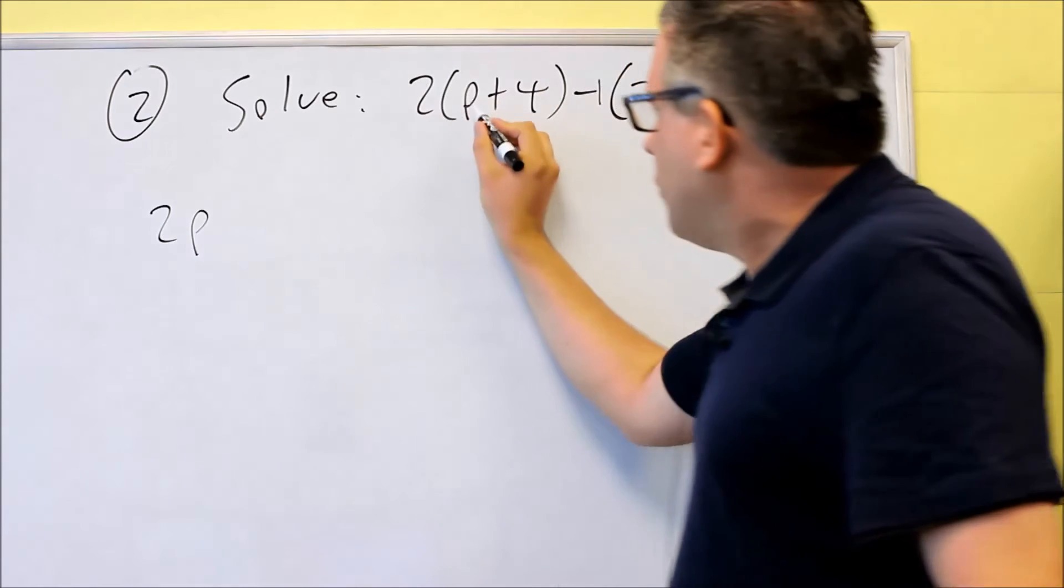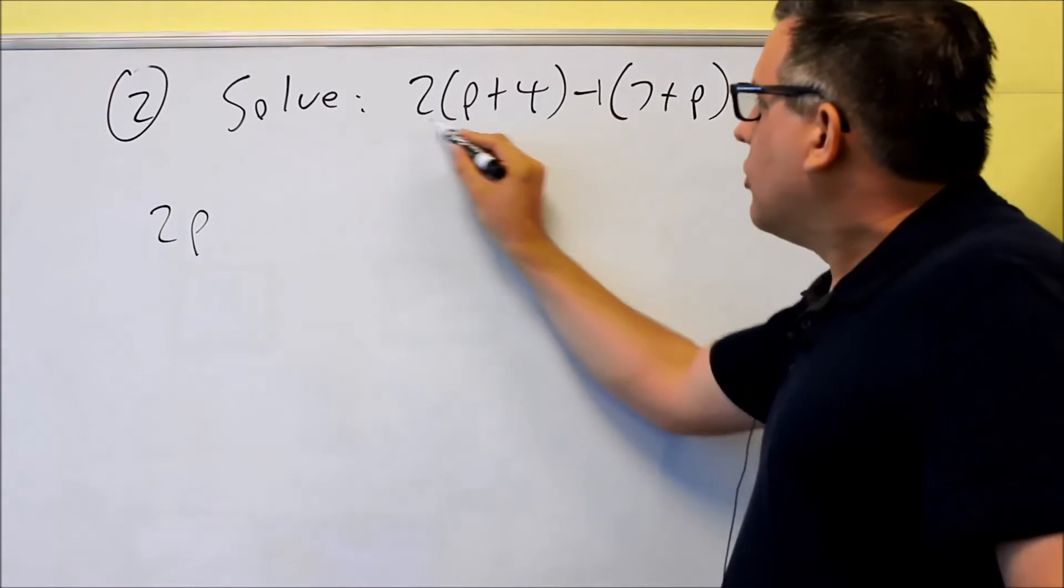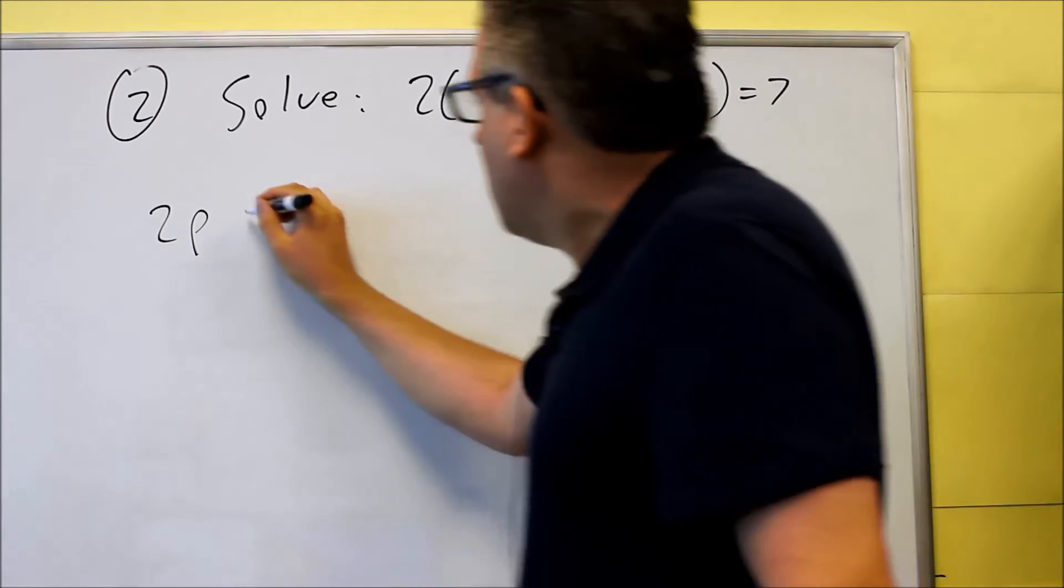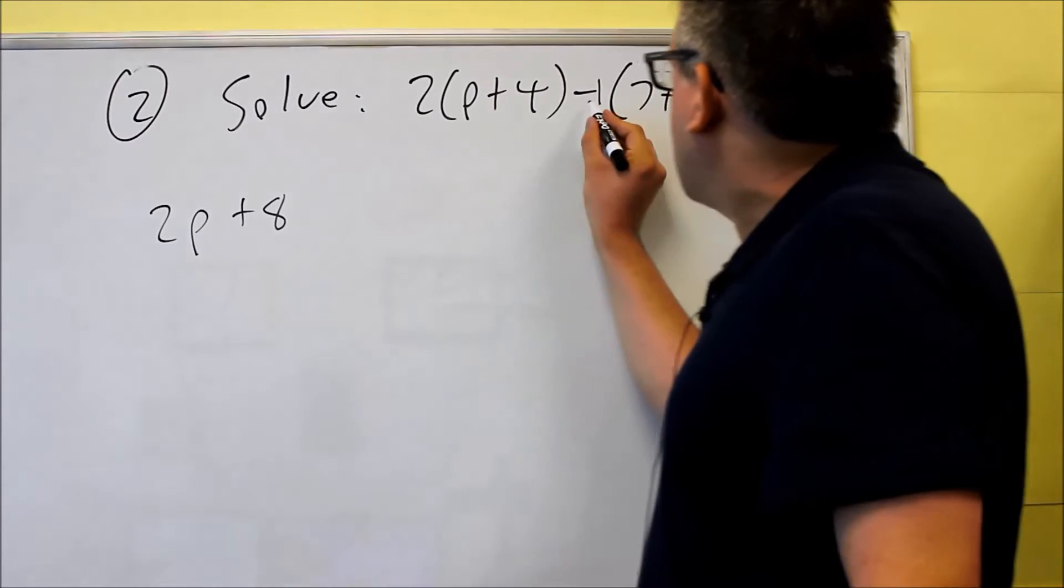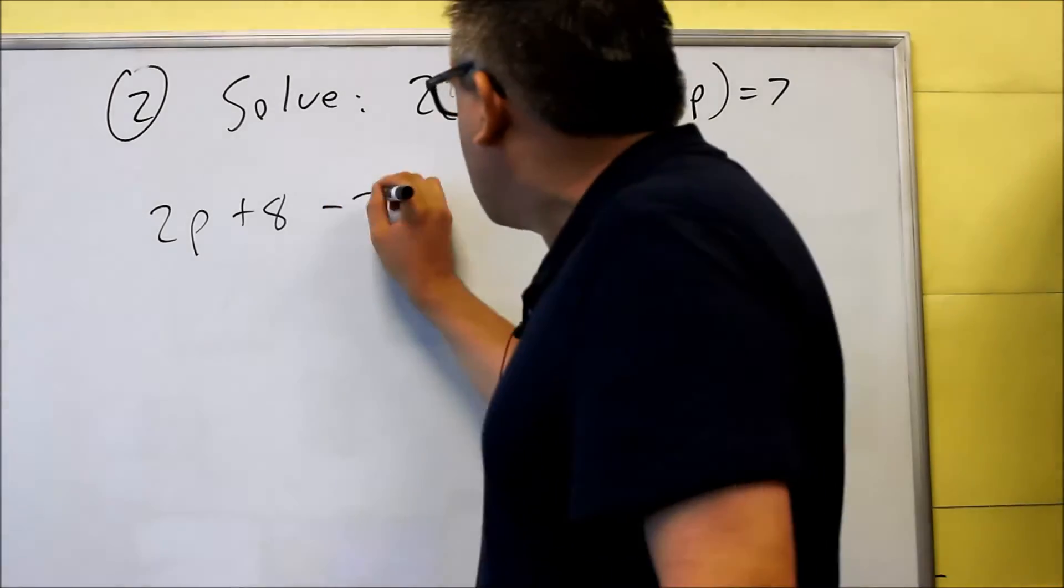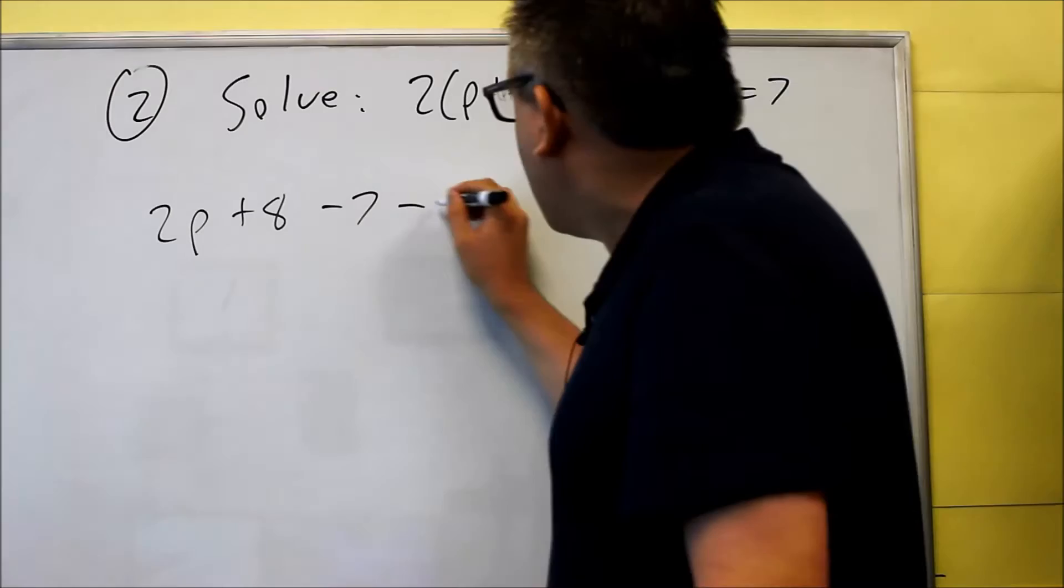So we're going to do two p, and then two times the first one, two times the second one. Two times p you get for that one, and then two times four is eight. Next, we have a minus, a negative one times both these things on the inside. So negative one times seven is a minus seven. Negative times a positive p is negative p.